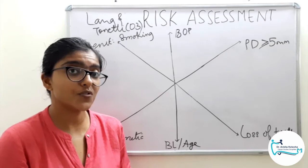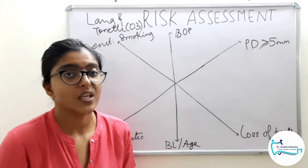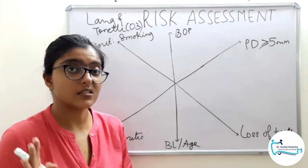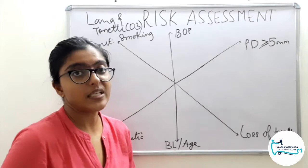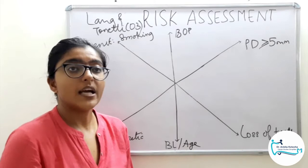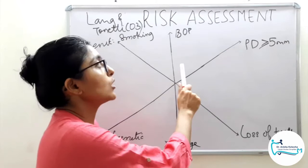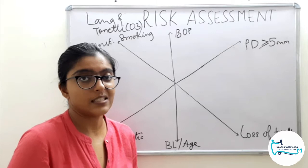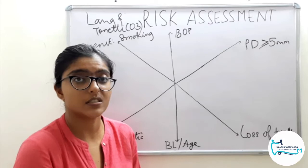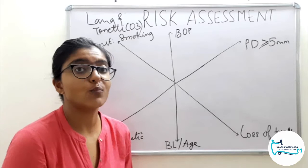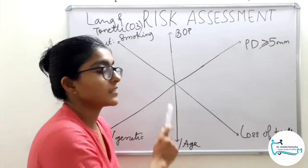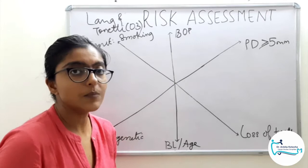To begin with, bleeding on probing reflects the patient's compliance in maintaining oral hygiene, the patient's host response, the microbial status residing within the oral cavity, and the overall status of the oral cavity. Generally, bleeding on probing represents the overall hygiene status, especially when coupled with residual probing depth after active therapy is completed, which represents the efficiency and outcome of treatment rendered.